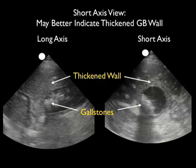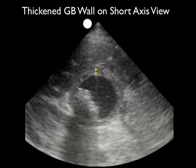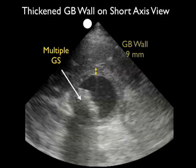This patient also had a positive sonographic Murphy's sign. Here I'm going to still that last image of the gallbladder in short axis configuration, and we see the anterior wall of the gallbladder well delineated. Notice the calipers across with a measurement of nine millimeters, fulfilling the criteria of a thickened wall.